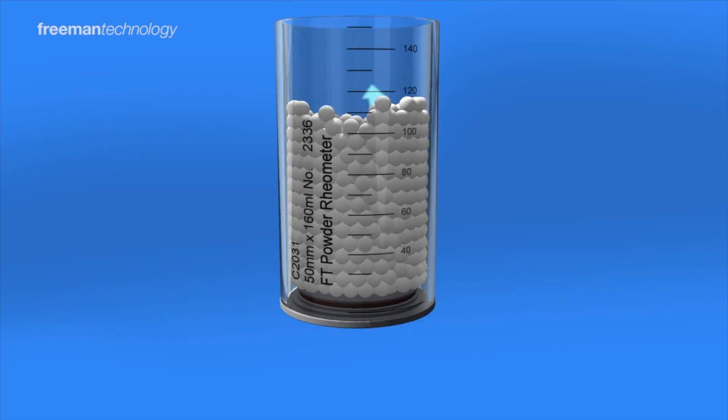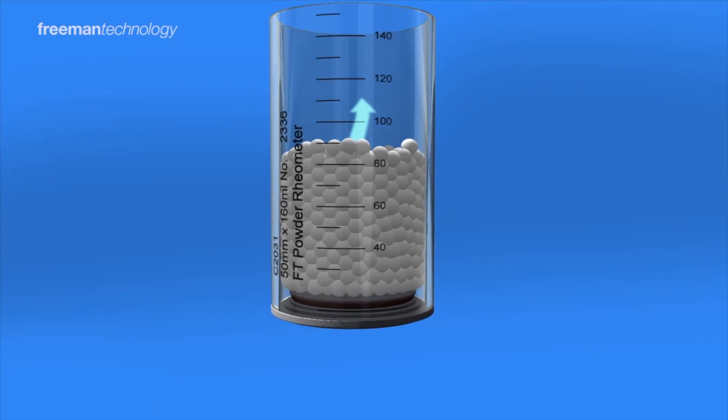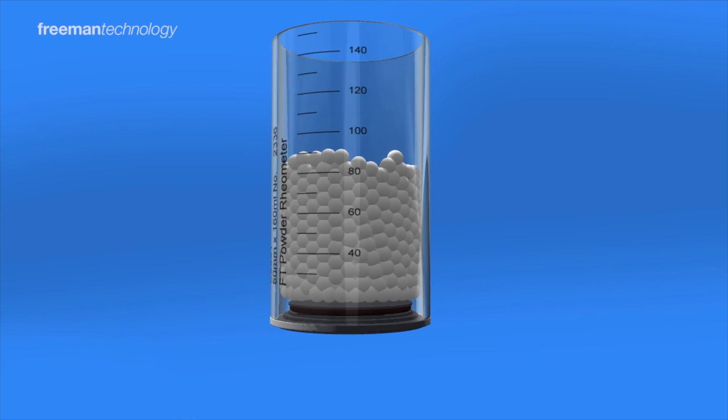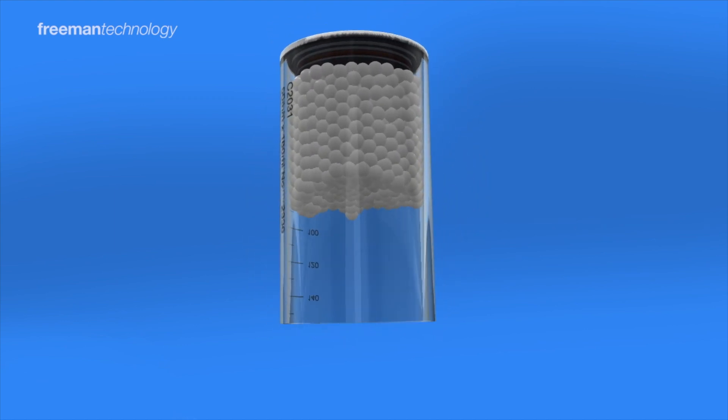If we look at a processing environment, powders are handled under different stress regimes or strain regimes. They can be consolidated, which extrudes the air, causing the particles to pack more closely and changes the way the bulk powder behaves.